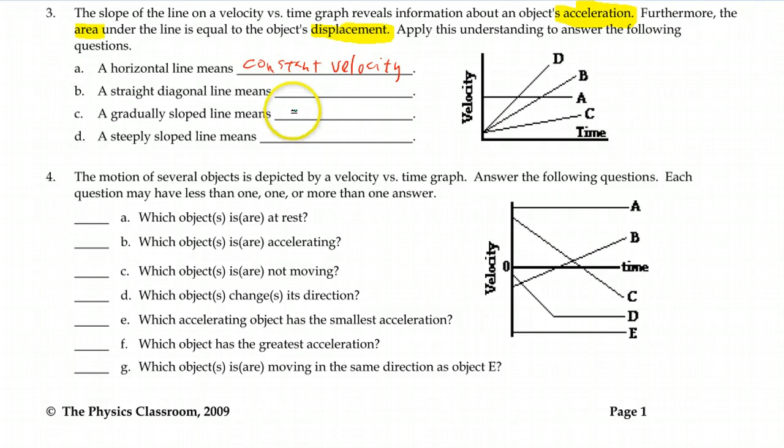If the line is diagonal but straight, it means you have a constant value of acceleration. So you're speeding up or slowing down by a set amount.